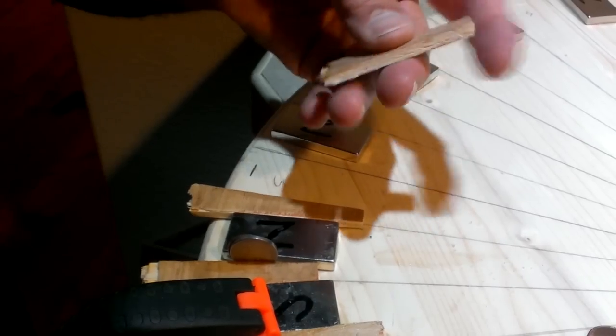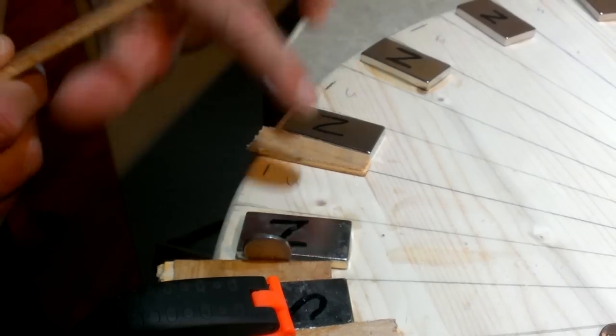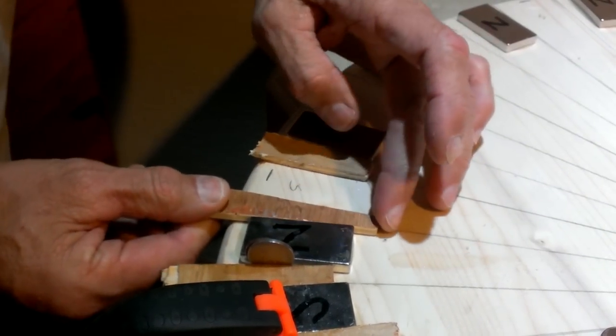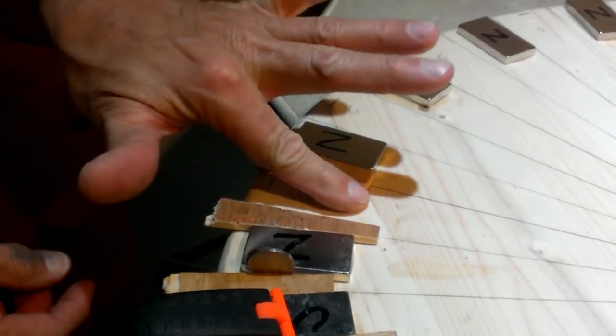First, what I did is I made these shims here, cut at angles, so when they are put down between the two north-facing magnets, I have a place to slide the south-facing magnet right here in this area.